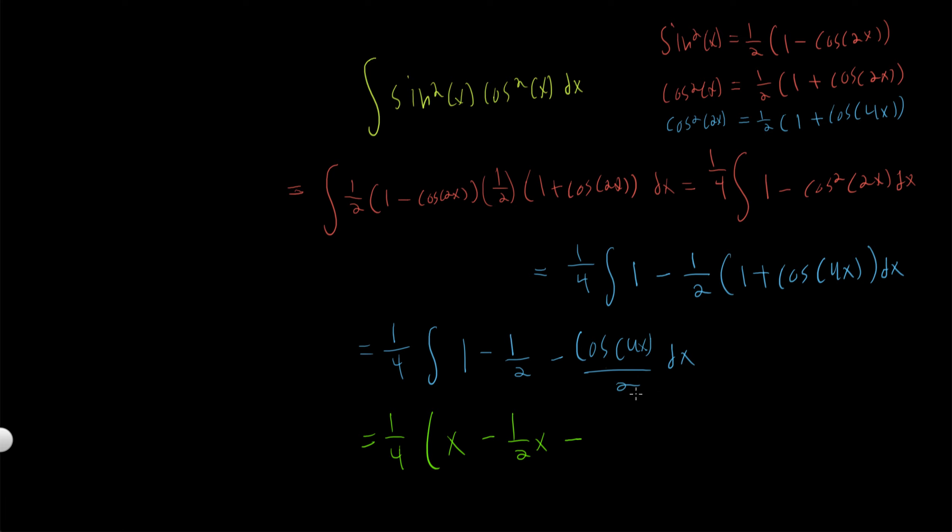Think about why: sine of 4x over eight, because if we take the derivative of this, we get cosine of 4x over eight times chain rule, times four. So the four and eight cancel and it becomes a two on the bottom, so the derivative of this function is the integrand.